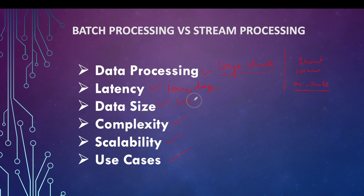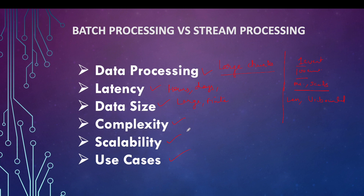Data size in batch systems is large and finite. For streaming systems, a particular trigger may process one record or one event at a time, or 100 events, and it will be unbounded. Complexity-wise, writing logic for batch systems may not be as complex as for stream processing, due to consistency challenges involved in writing stream processing code.